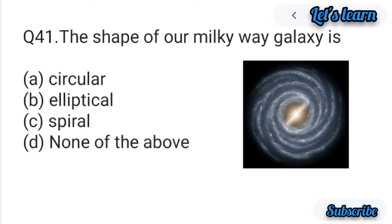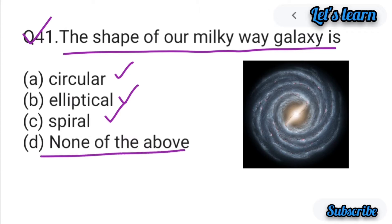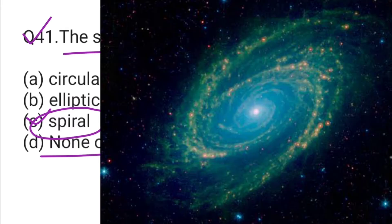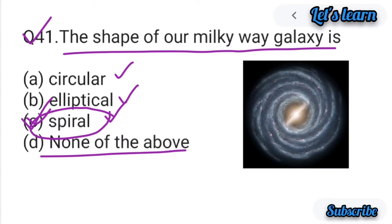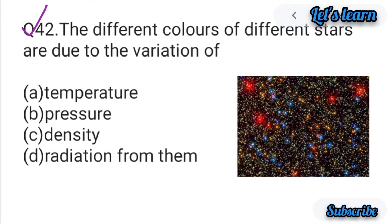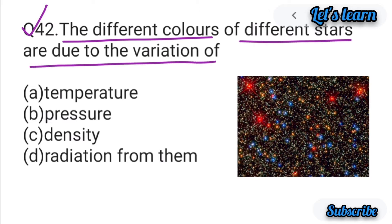Let's start today's class. Question number 41: The shape of our Milky Way galaxy — Milky Way galaxy का shape कैसा है? Options are: circular, elliptical, spiral, or none of these. Option C is correct. The Milky Way galaxy का shape spiral होता है। Sun खुद एक star है और जितने भी planets sun को चारों तरफ घूमते हैं, वो सब एक galaxy का part हैं जिसे हम Milky Way galaxy बोलते हैं। Galaxy is a large group of stars, gas, and dust bound together by gravity. All stars visible in the night sky are inside our Milky Way galaxy. So option C — spiral — is correct.